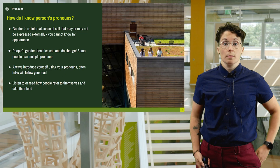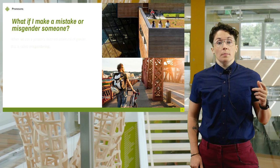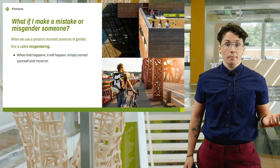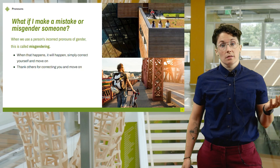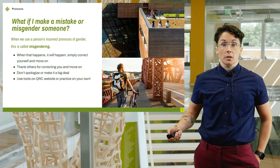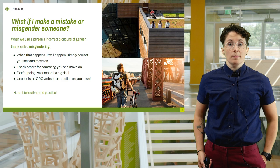What if I make a mistake and misgender somebody? Misgendering happens when we use a person's incorrect pronouns or gender. When this happens — and it will happen — simply correct yourself and move on. When somebody else corrects me, I say thank you, I change my language, and move on. That's it. It's important to not make a big deal out of it or apologize profusely. If you do keep misgendering people or are new to using expansive pronouns, I suggest you practice out loud by yourself, or you can head over to the Queer Resource website for some tools you can use. It takes time and practice to expand the English language while deconstructing assumptions we make about who people are by looking at them.